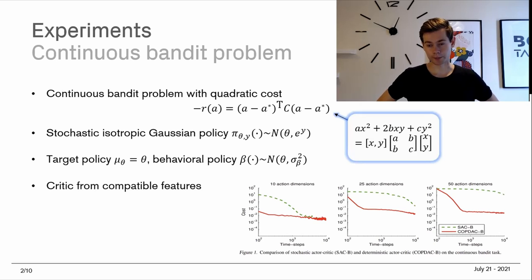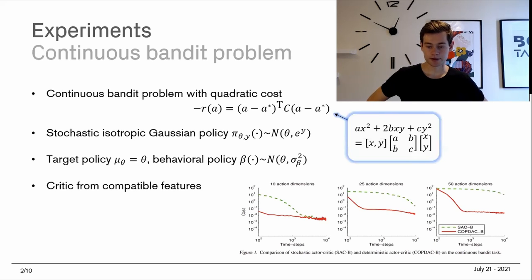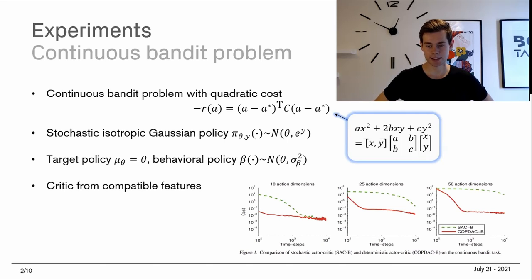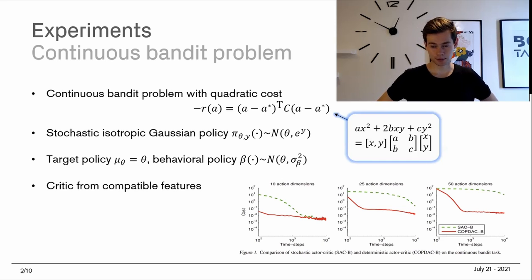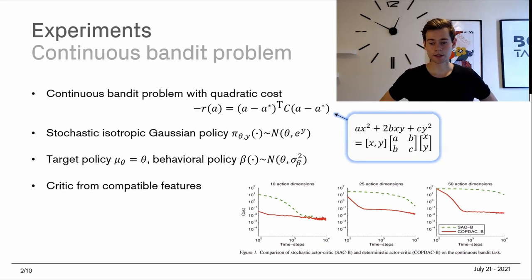The evaluations were done for a number of different dimensions, which represent the number of slot machines — we have 10, 25, and 50, as you can see. The thing to note is that SAC is the stochastic algorithm and COPDAC is the deterministic one. In general, the COPDAC algorithm performs better than the SAC algorithm, and in particular for the 50-dimensions case — or the higher dimensional cases in general — the discrepancy between the two algorithms is large.